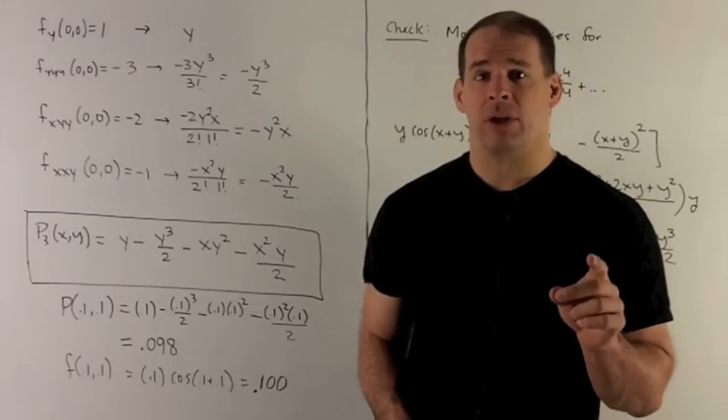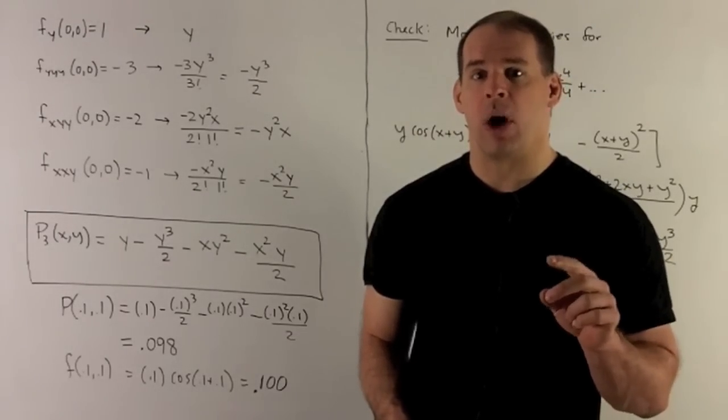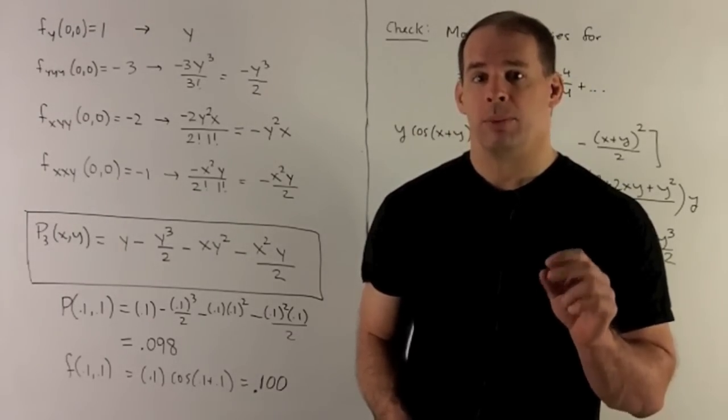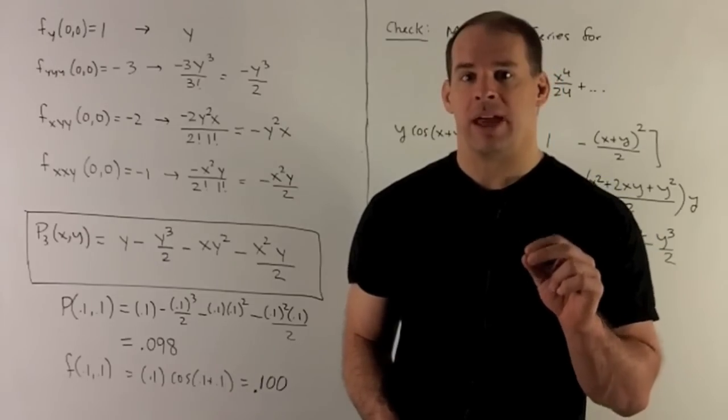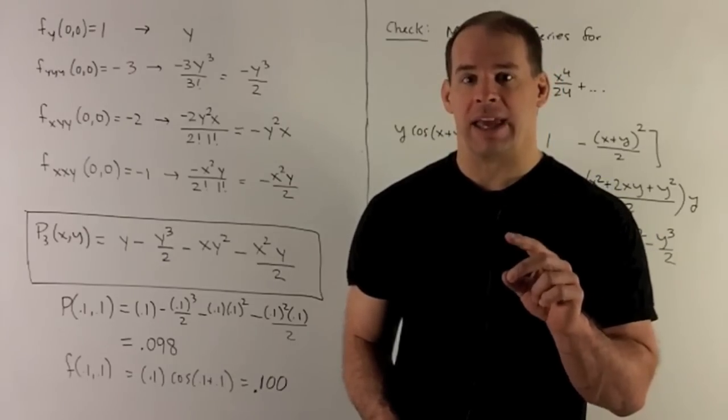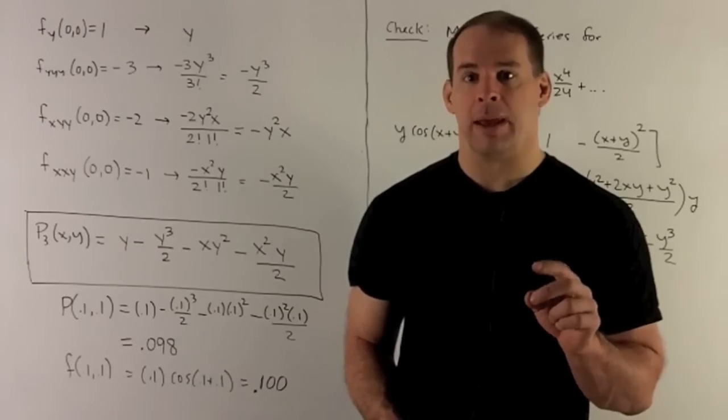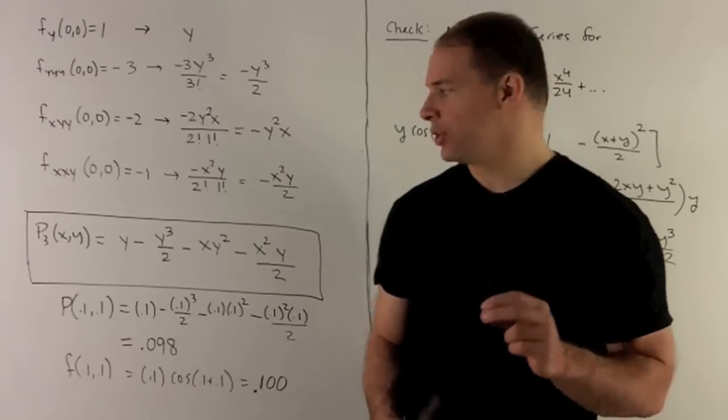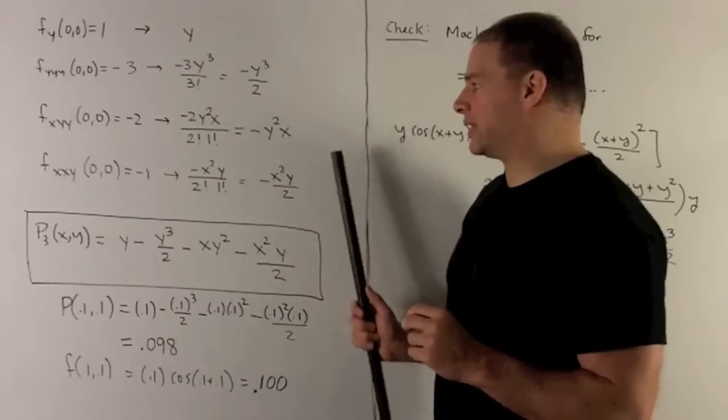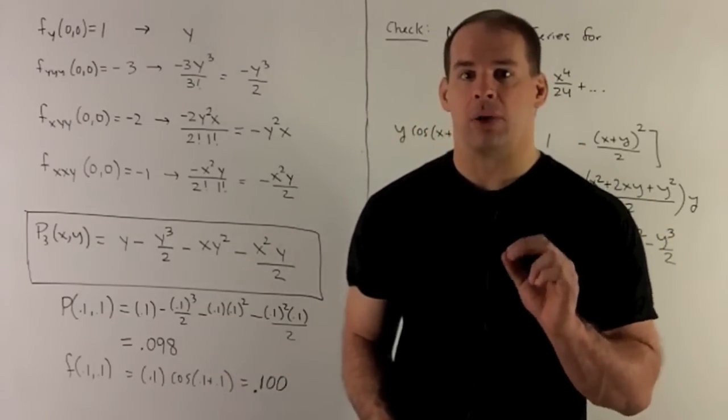Then we have two partials in x, 1 in y. So that's going to give me a -1. We hit that with an x^2*y, and I divide again by 2 factorial, 1 factorial. That's going to give me -x^2*y/2. We sum all these up, and that gives us our third Taylor polynomial.